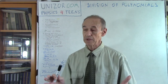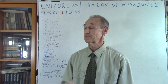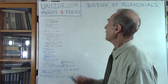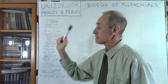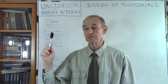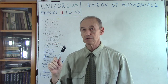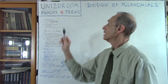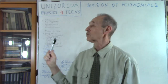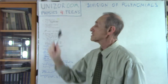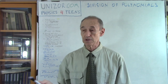Polynomials can be divided similarly to long division, something like this. This lecture is part of the course called Math for Teens — that's incorrect, Physics for Teens — but I have decided to return to this particular application of the fundamental theorem of algebra. So there is a Math for Teens course, and this lecture belongs to that course. It's all presented on unizor.com, both Math for Teens and Physics for Teens, and something else.